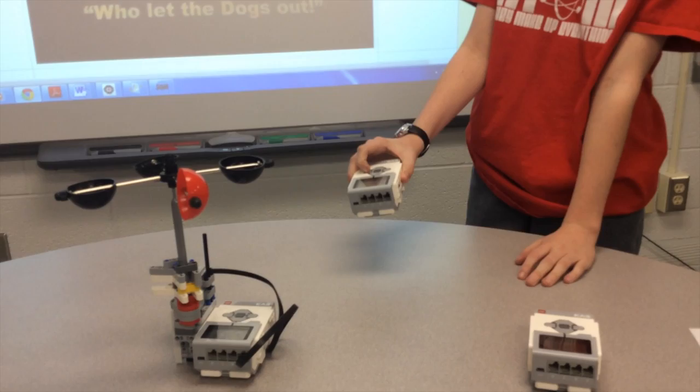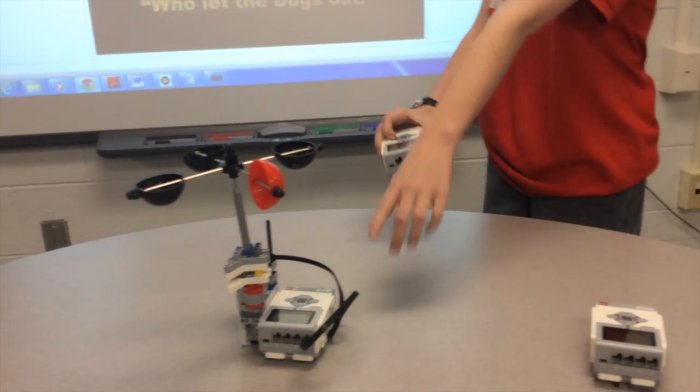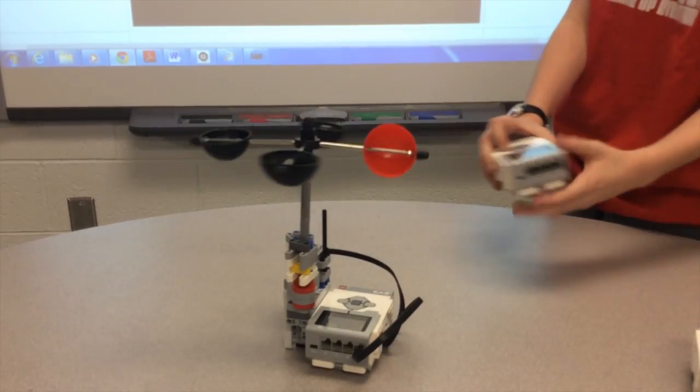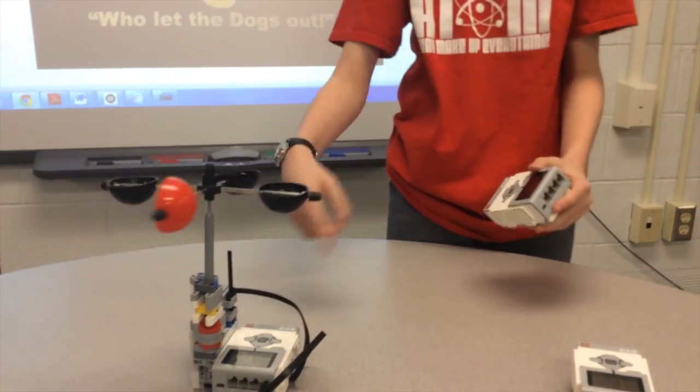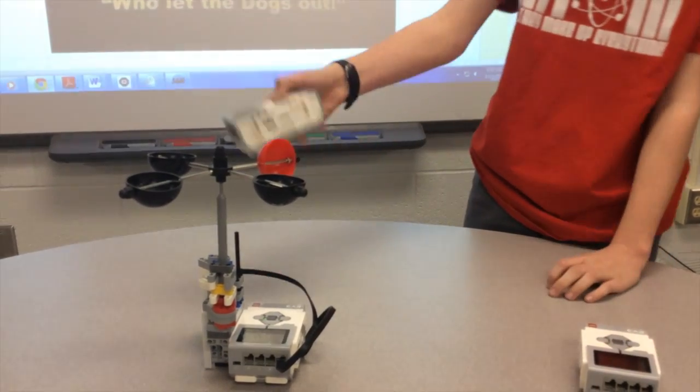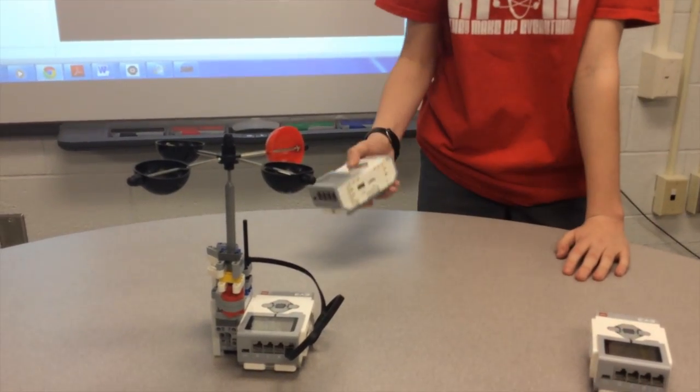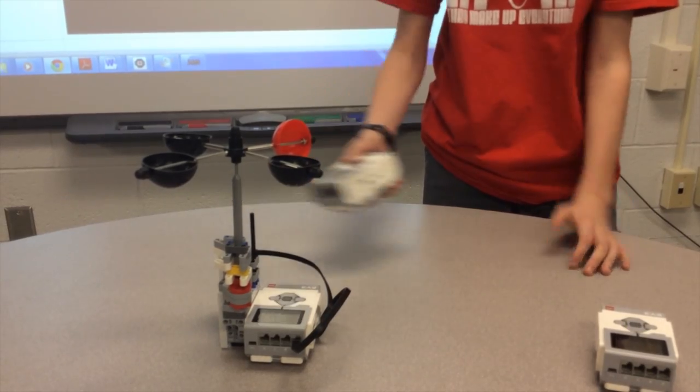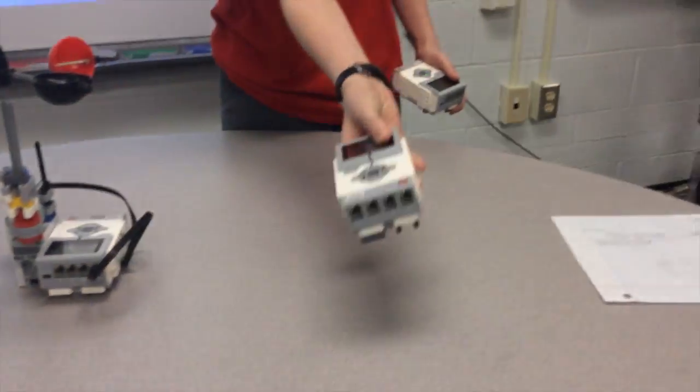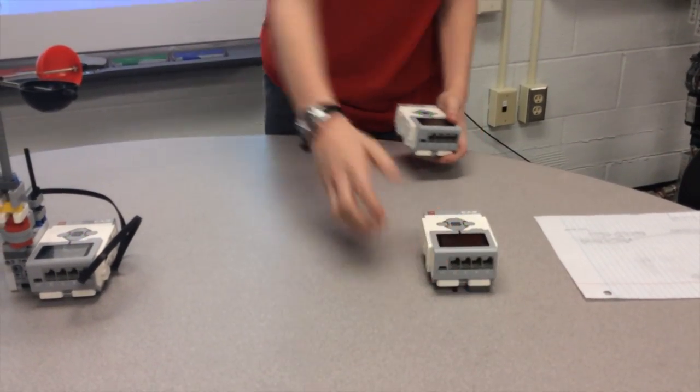When I click this, this robot right here begins to get a signal from here and it tells it to start spinning. So it looks like there's wind around the anemometer. And once this finds it's at a certain speed, it'll send a message to this robot to tell it can sound the alarm.